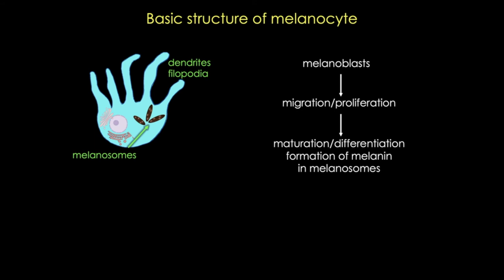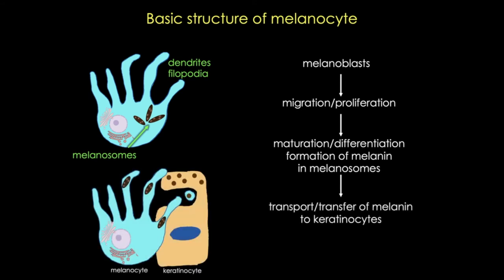I think of melanosomes as sort of mobile labs that are making melanin. It's important to have these melanosomes because the biological intermediates of melanogenesis are pretty toxic, so we need to protect the rest of the cytoplasm and proteins from those products. Melanosomes produce melanin and then that melanin is transported to and transferred to keratinocytes.